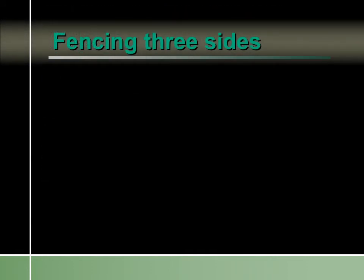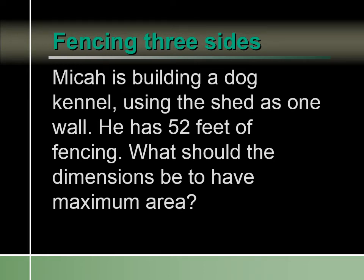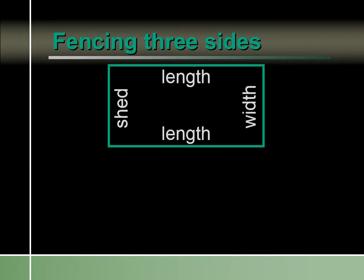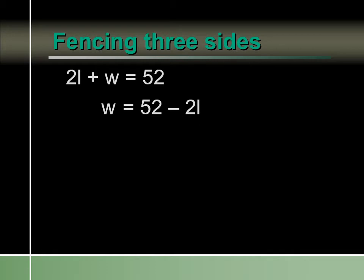Let's say we're building a fence against a shed. We only have 52 feet of fencing, but we get to use a side of the shed for part of the fencing. We have length and length, but instead of two widths, we only have one width because the other side is the shed. So our perimeter changes: instead of 2L plus 2W equals 52, we have 2L plus 1W equals 52, which means W equals 52 minus 2L. Area equals length times 52 minus 2L.